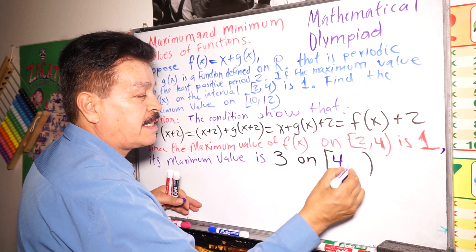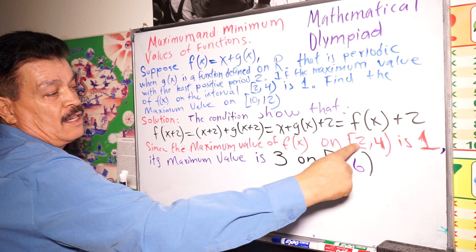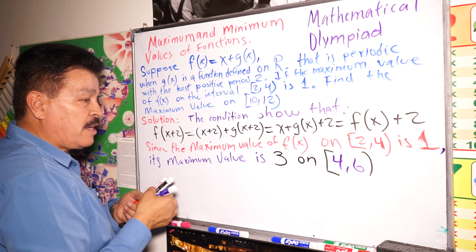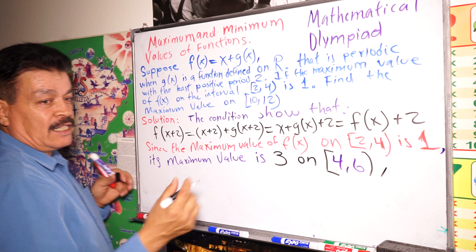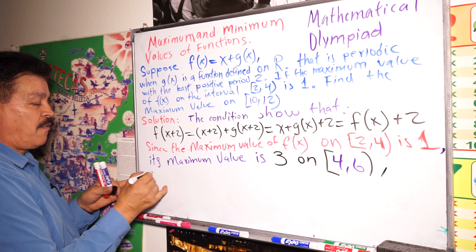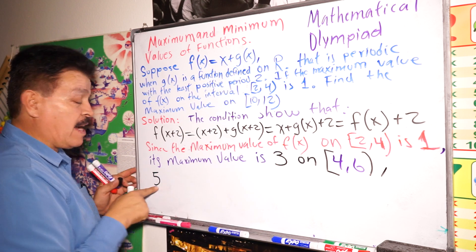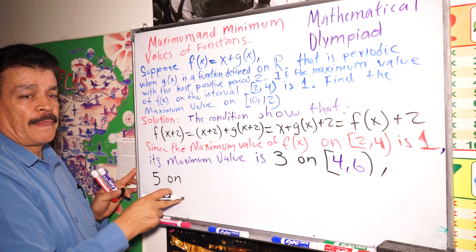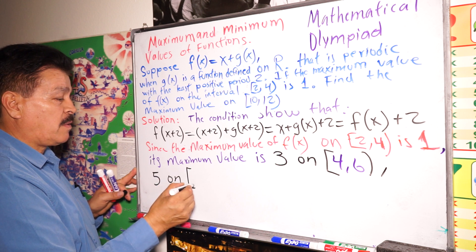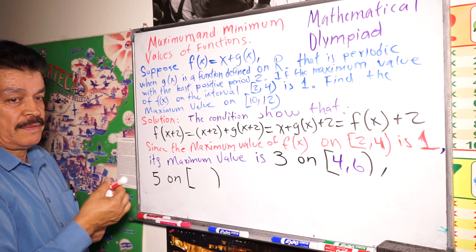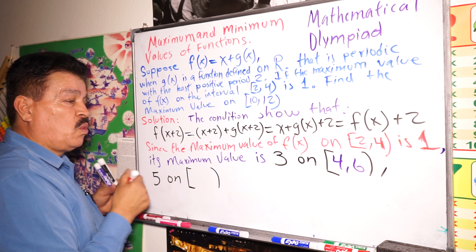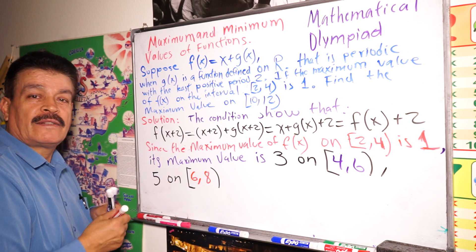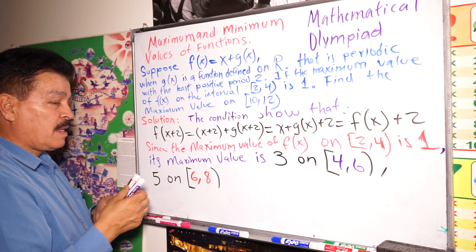2 plus 2 is 4, 4 plus 2 is 6, got it. So now, 5 - let's write 5. 3 plus 2 is 5 on which point? 4 plus 2 is 6, 6 plus 2 is 8, alright.